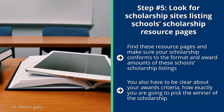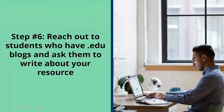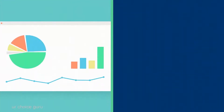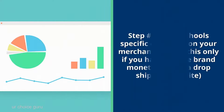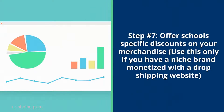It's very important to make sure your scholarship is a real scholarship, not a scam. You must be clear about your awards criteria and how you'll pick the winner. Step six: reach out to students who have .edu blogs and ask them to write about your resource — you can pay them or appeal to their willingness to support your resource website. Step seven: offer schools specific discounts on your merchandise — use this only if you have a niche brand monetized with a dropship website. Reach out to colleges that offer student discounts and ask them to list your discount page on their resource pages.